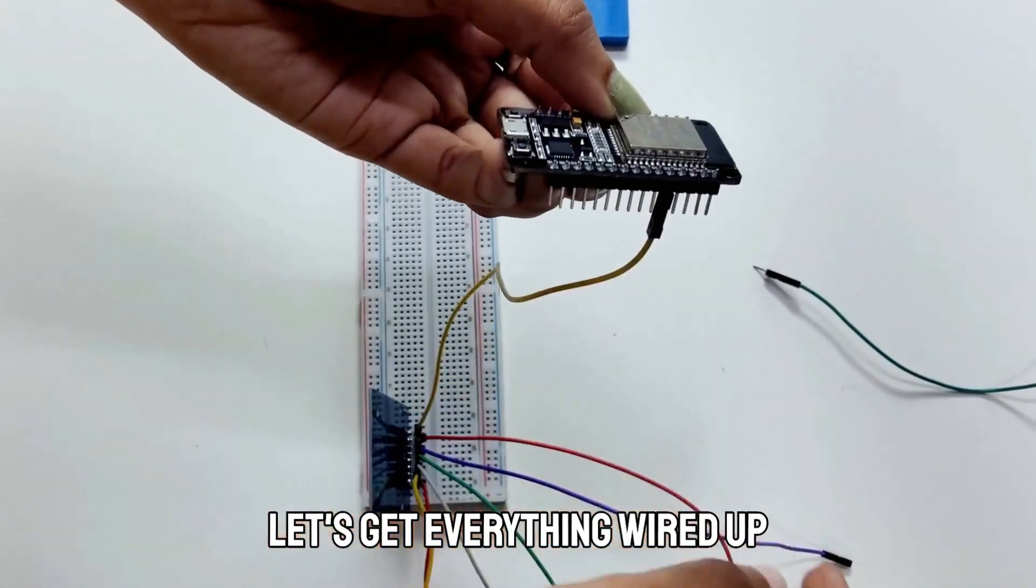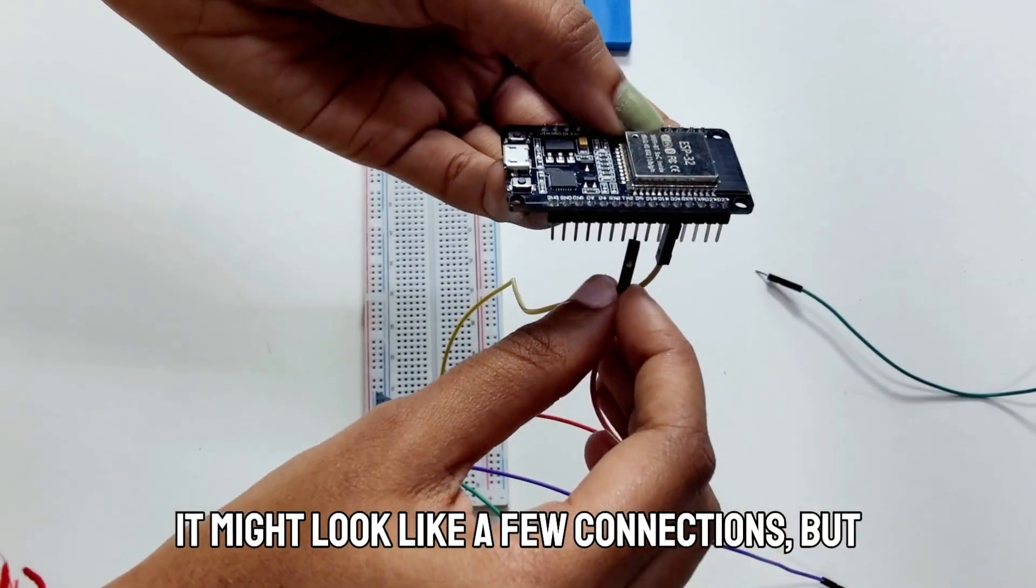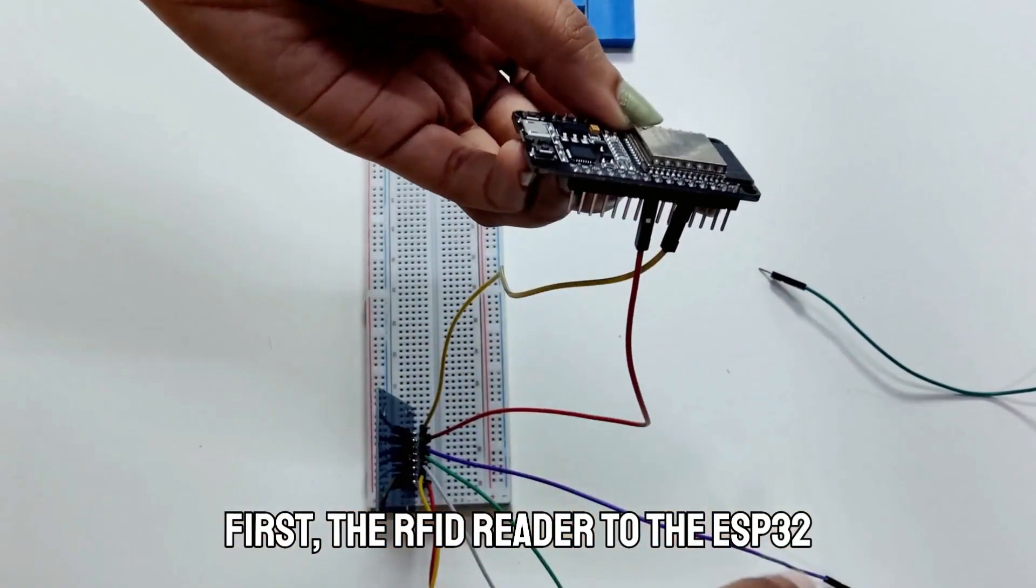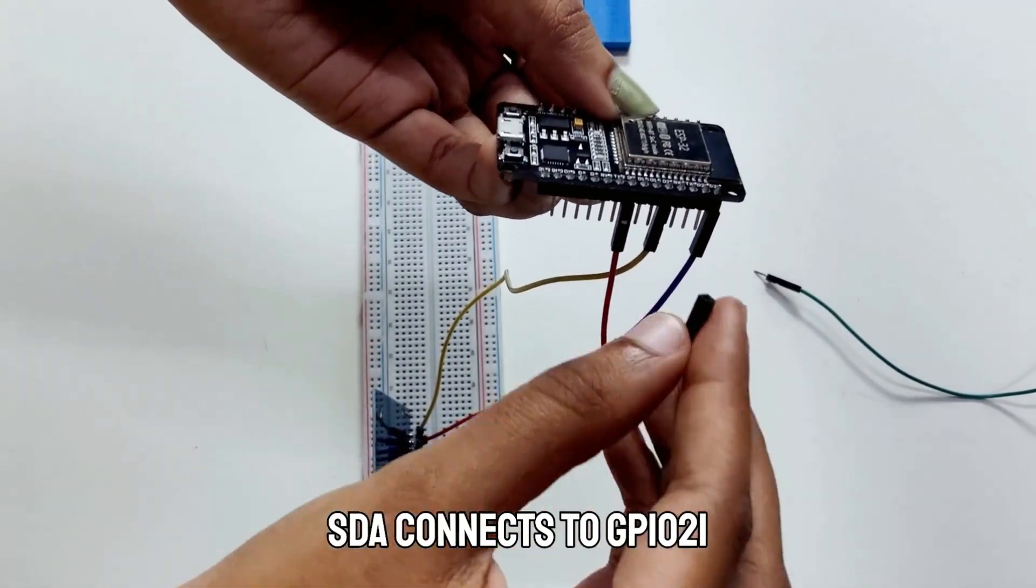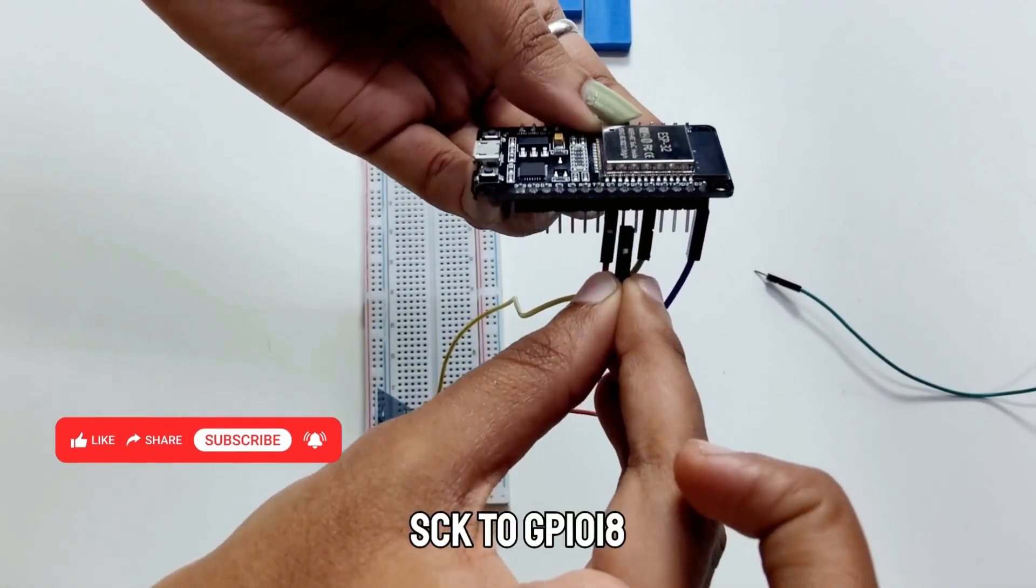Let's get everything wired up. It might look like a few connections, but it's straightforward. First, the RFID reader to the ESP32. STA connects to GPIO21, SCK to GPIO18,